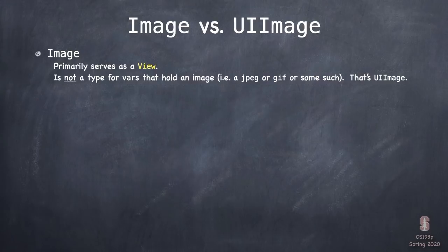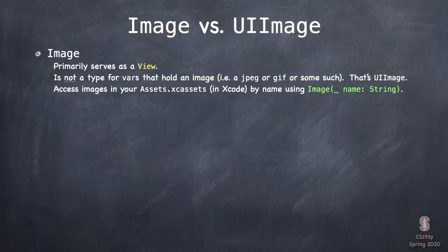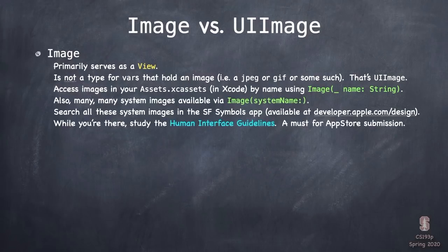A similar dichotomy exists between Image and UIImage. Image in SwiftUI is primarily a view — it's a view that displays an image. It's not something you'd make a var of type Image to hold an image in; it is a view. You can specify what image to display in a number of ways. One way is by giving it a string, and it will use that as the name of an image in your assets.xcassets file. There are also a ton of system images.